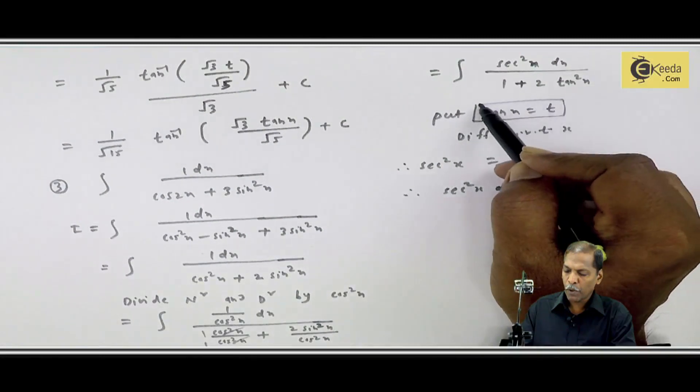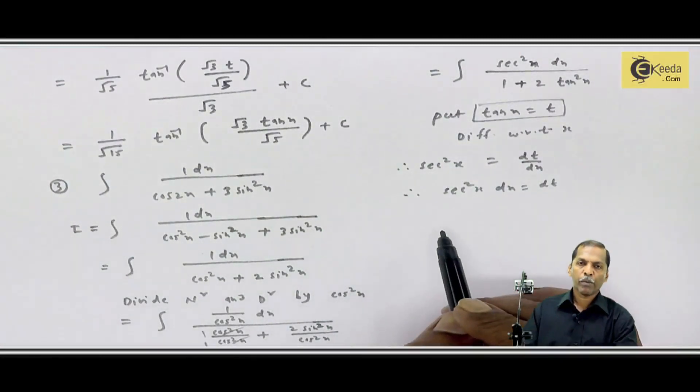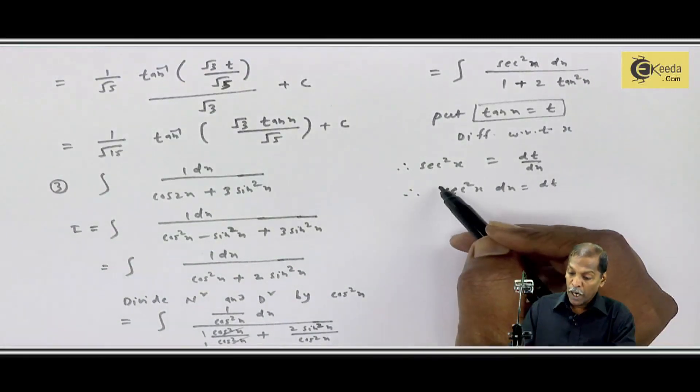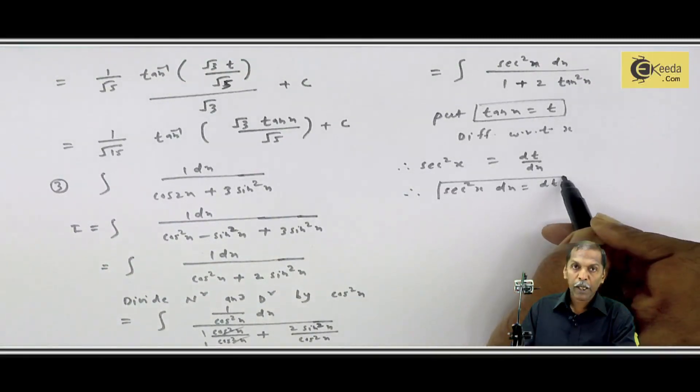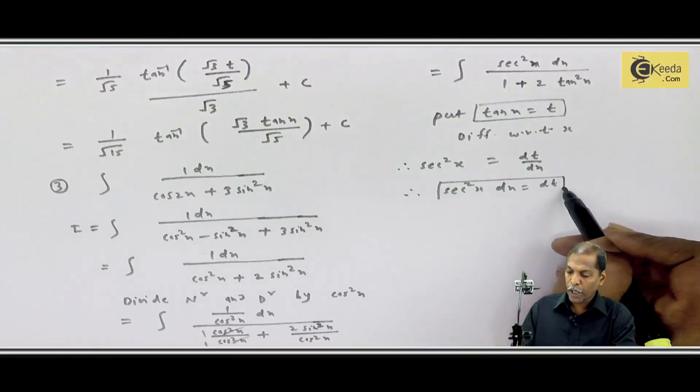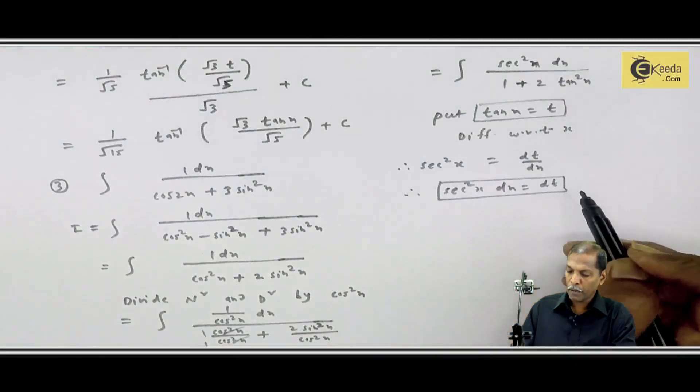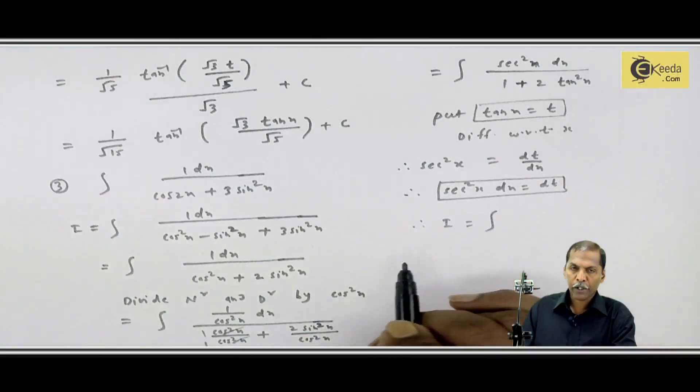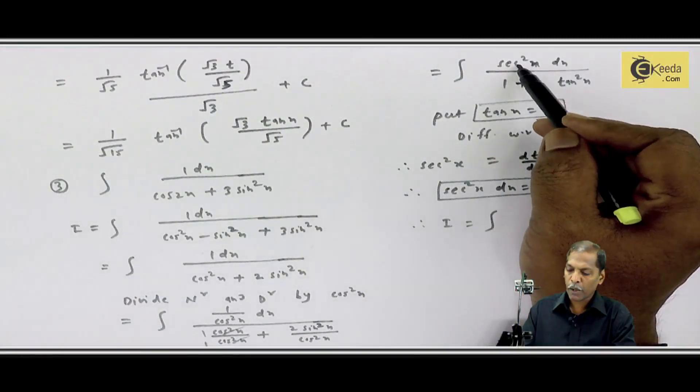First of all, tan x is equal to t. This is the question where you can see tan where you can write. And second term is sec square x dx. We have to replace dt. So our question is therefore I for integration numerator is sec square x dx.